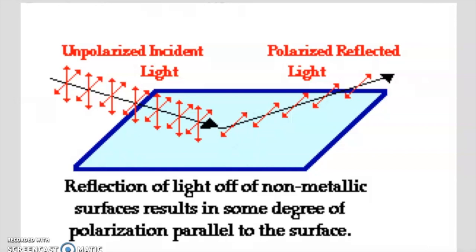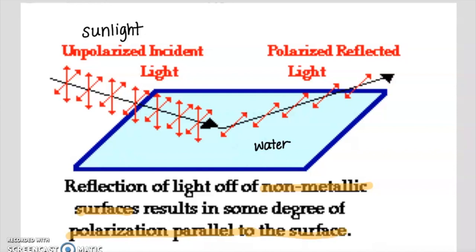There is another way that polarized light is created, more naturally. When unpolarized light — similar to sunlight, which comes to us unpolarized — hits a non-metallic surface, it's going to reflect off that surface and become polarized parallel to the surface itself, as you can see in this diagram. The reflection process of this non-metallic surface is kind of acting like a polarizer itself. For example, water is a non-metallic surface where this occurs.